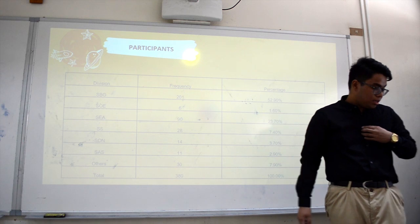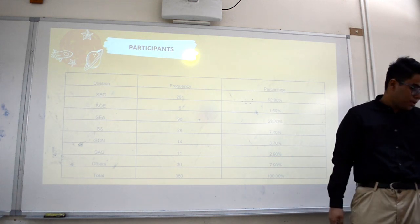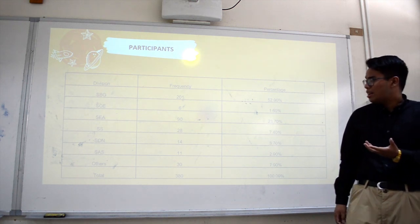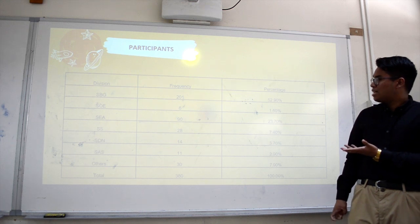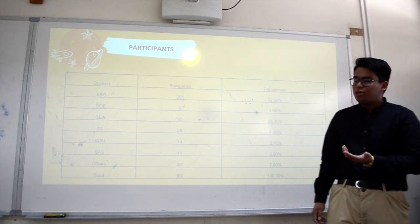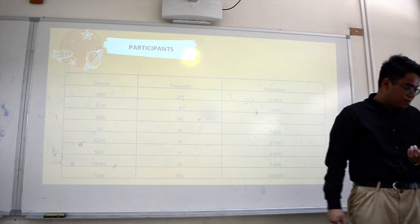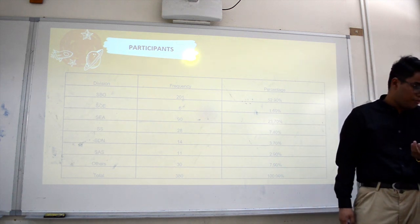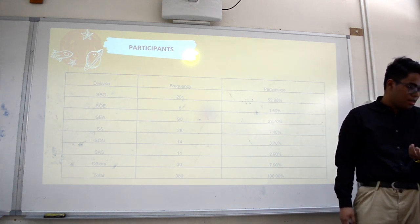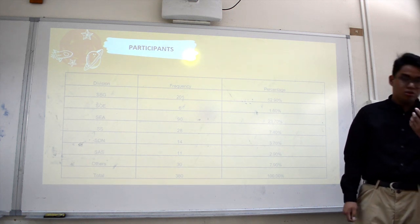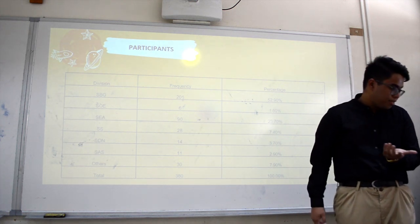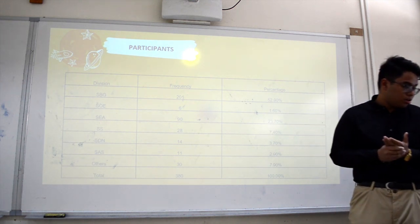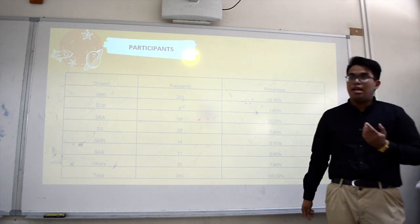The respondents were gathered using systematic random sampling with an interval of 5. Since the population is unknown, we used the Cochrane formula to estimate the sample size of the study. We used 5 as the interval for selecting the 380 students.